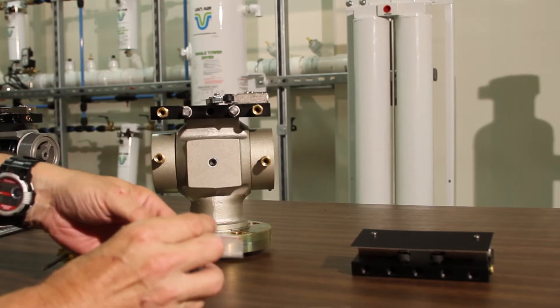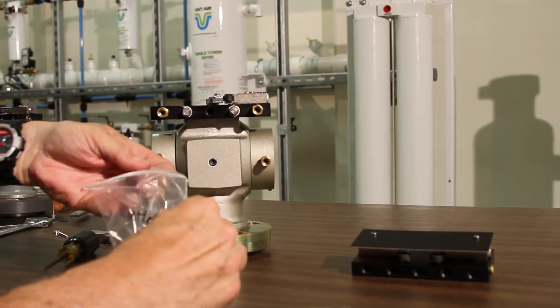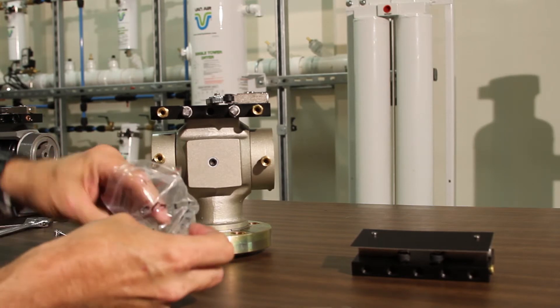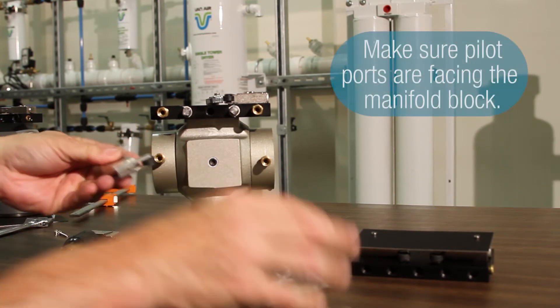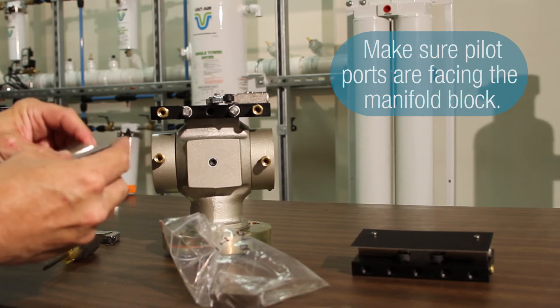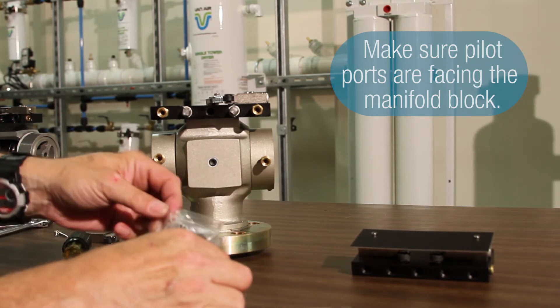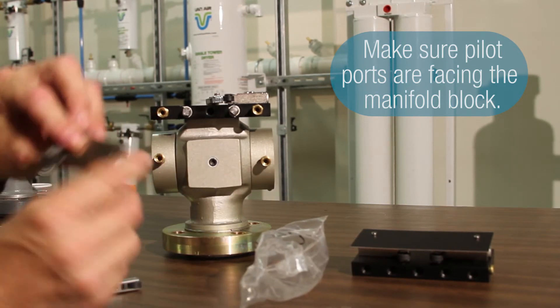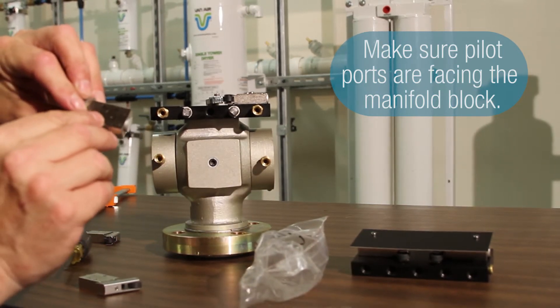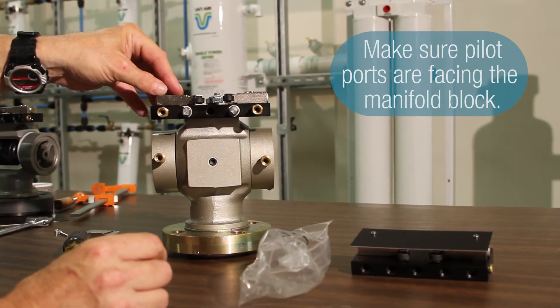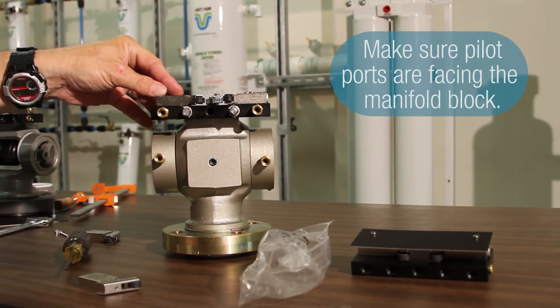So when you replace the pneumatic limit switch with a new switch, you've got to make sure that you replace it with the limit switch that seals the pilot ports for the pneumatic limit switch facing the manifold block.